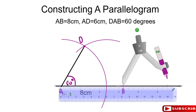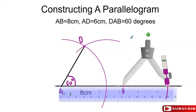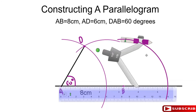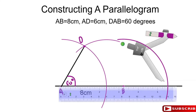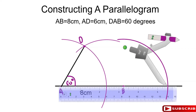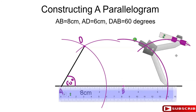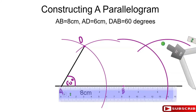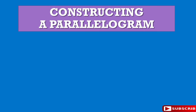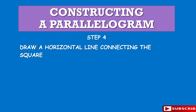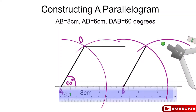Swing an arc from B, then move to the point where it intersects the horizontal line and swing another arc from there. That intersection point gives us 6 cm. Now draw a line from B up to that intersection point. Then draw a straight line from D over to this intersection point. And that is your parallelogram.